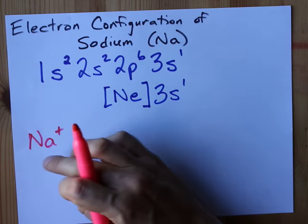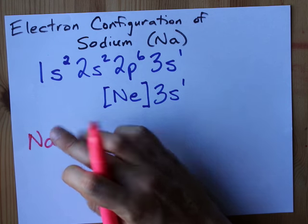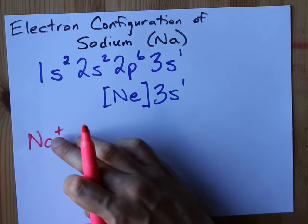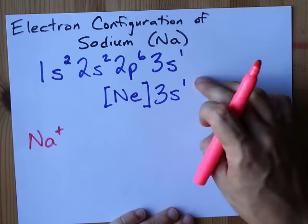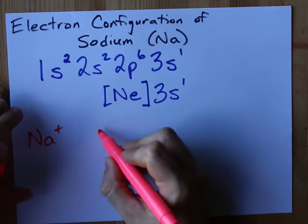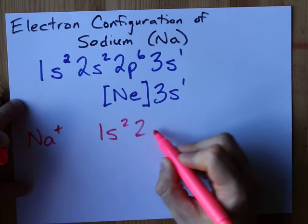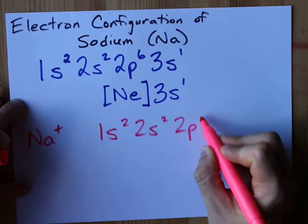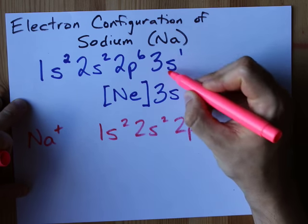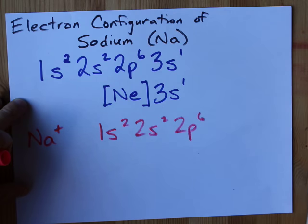And your job when you have an ion, a positive ion specifically, is to remove that many electrons from the full electron configuration. We are going to have 1s2, 2s2, 2p6, but we are going to remove this one 3s electron.